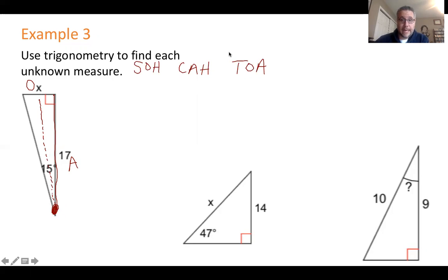We don't know anything about the hypotenuse. So we can't use sine because the hypotenuse is needed. We can't use cosine because the hypotenuse is needed. So we have to use tangent because tangent uses opposite and adjacent.